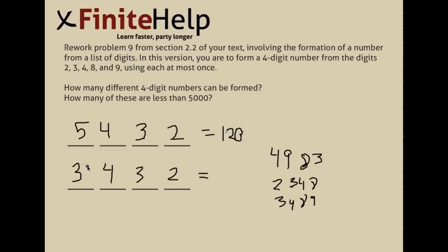And I don't want to over-explain this, but just to clarify, this three, people get confused on that. The three came from the fact that there are only three numbers less than five. And in order for the number to be less than 5,000, it has to start with the digit less than five. So this three represents any of those three numbers. And then the four after that, well, you've taken away one number. Now you have four left and three left and two left. Okay.